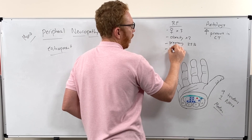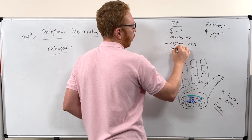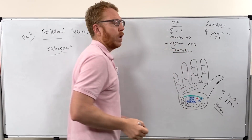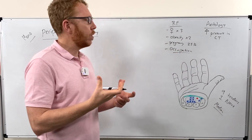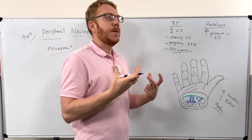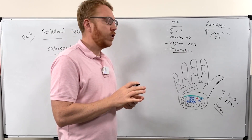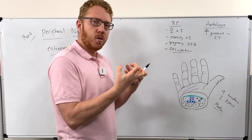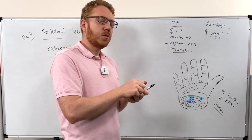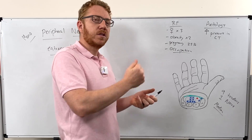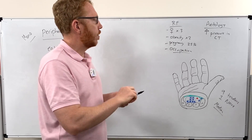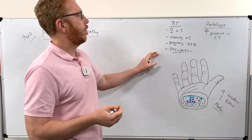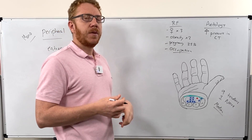A really strong risk factor is occupation — particularly manual handling occupations like using hammers and drills, jobs requiring a lot of force in the hands, and vibrating tools like drills and jackhammers. These increase the risk significantly. Those are the four most common risk factors.